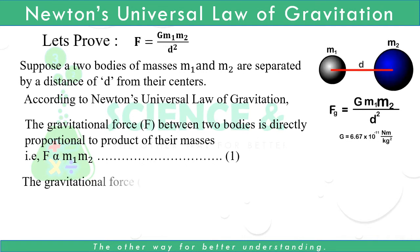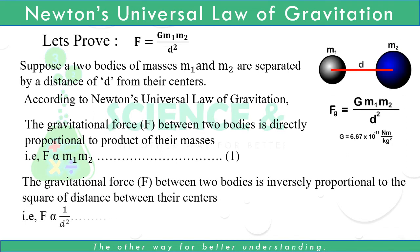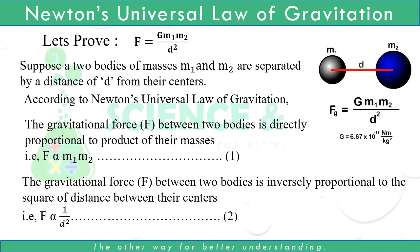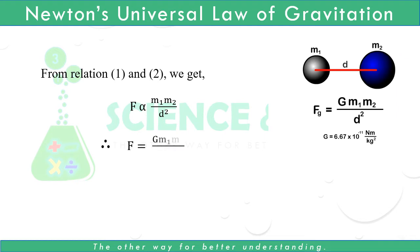Also, the gravitational force F between two bodies is inversely proportional to the square of the distance between their centers. That is, F ∝ 1/D². — Relation 2. From Relations 1 and 2, we get F ∝ M₁·M₂ / D². Therefore, F = G·M₁·M₂ / D².